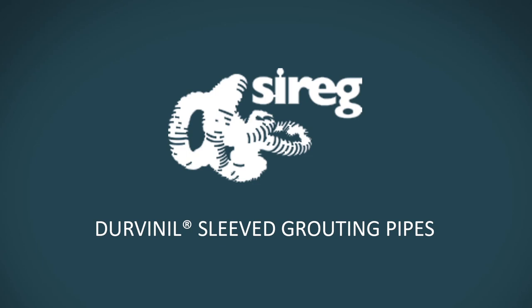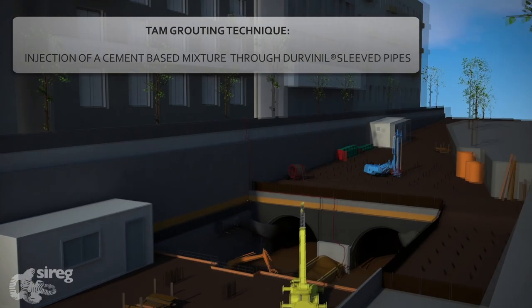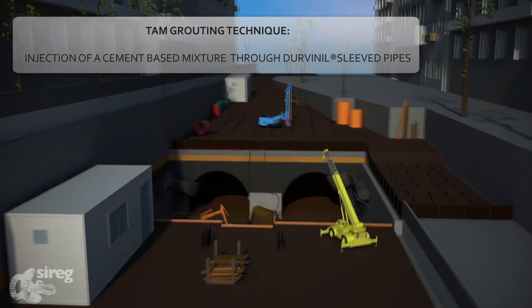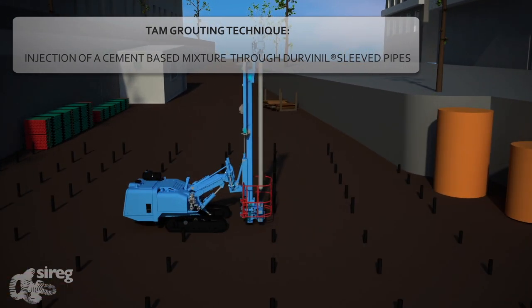CIRIC Geotech's Sleeved Grouting Pipes. Grouting technique is a treatment of the ground that consists in the injection of a cement-based mixture through durovinial sleeved pipes in order to improve the mechanic properties of the soil.